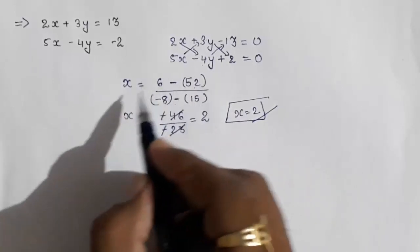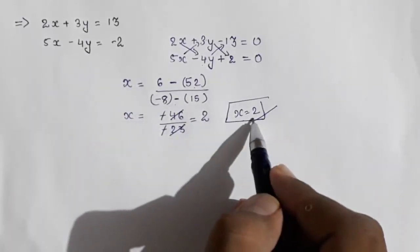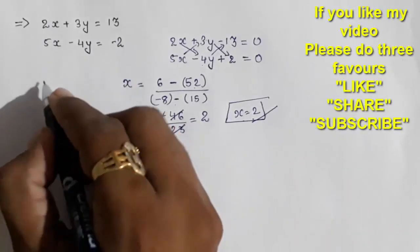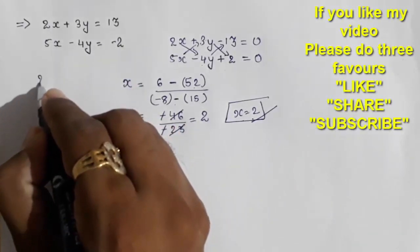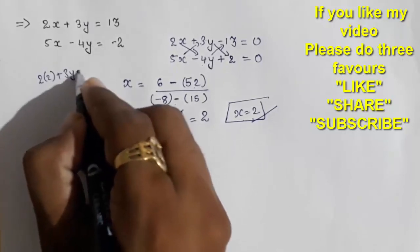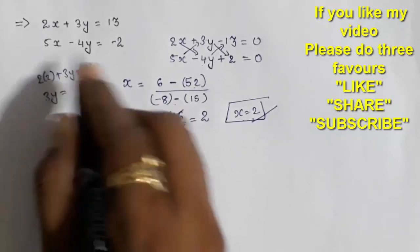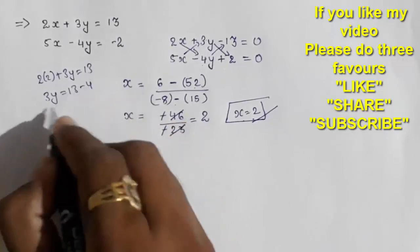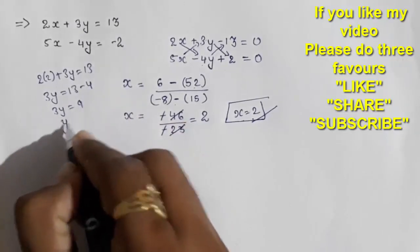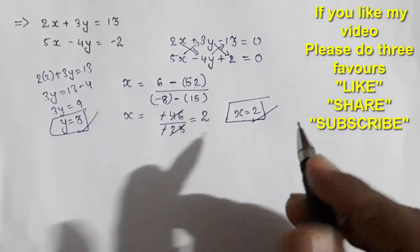Now we have x. To find y, substitute x = 2 into one of the equations: 2×2 + 3y = 30, so 4 + 3y = 30, which gives 3y = 26... that is 3y = 9, so y = 9/3 = 3.